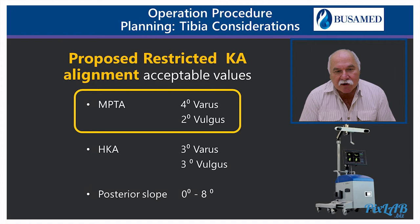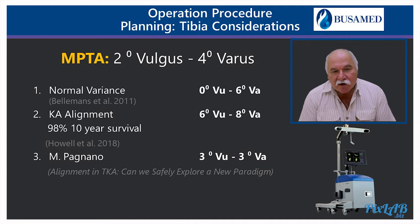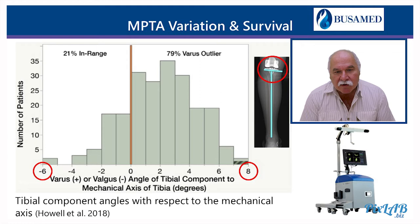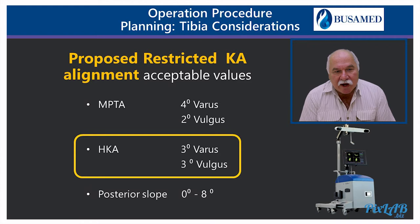If we start with tibia planning first, we have to decide what restricted values we are willing to accept. Personally, I would accept an MPTA of 4 degrees varus to 2 degrees of valgus. The reason I say that — if we look at the normal values studied by Professor Belamans, he found a mean MPTA in normal patients between 0 and 6 degrees of varus, with the mean at 3 degrees.